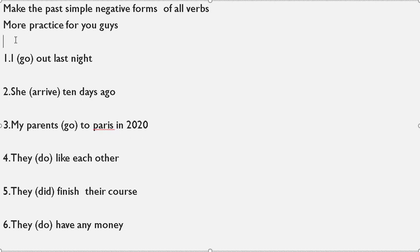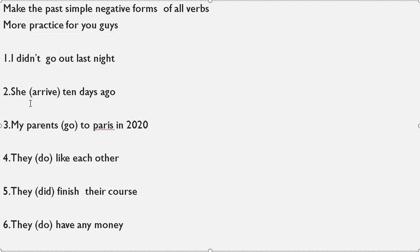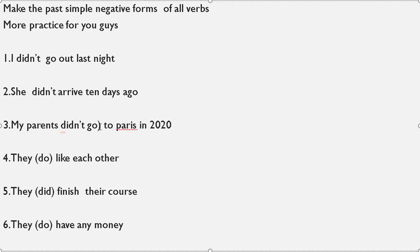First example: 'I go out last night' — we have the verb 'go', we use 'didn't': 'I didn't go out last night.' 'She arrived 10 days ago' — we use 'didn't': 'She didn't arrive 10 days ago.' 'My parents go to Paris in 2020' — we use 'didn't': 'My parents didn't go to Paris in 2020.' 'They do like each other' — this tense is present simple, changed to past simple; 'do' changes to 'did': 'They didn't like each other.'